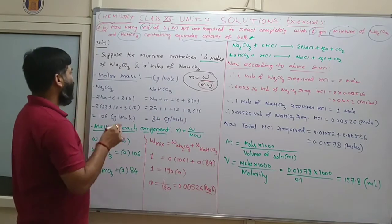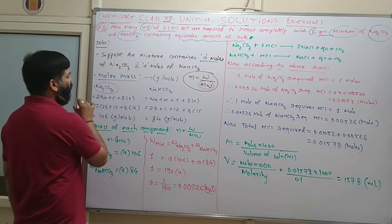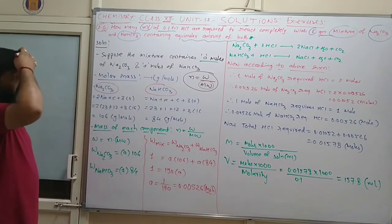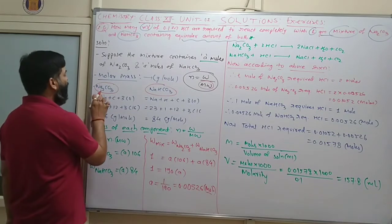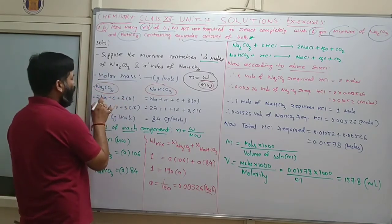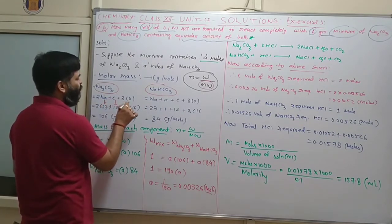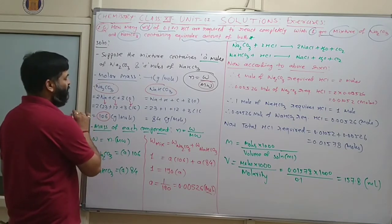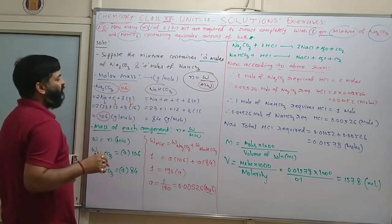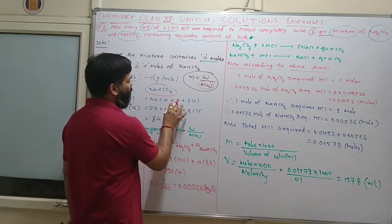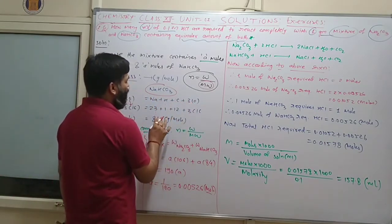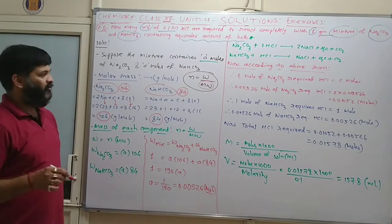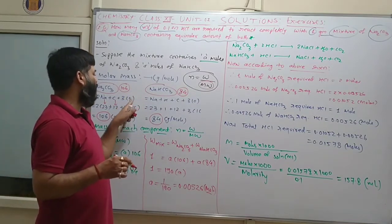Molar mass of Na2CO3: 2(23) + 12 + 3(16) = 106 g/mol. Molar mass of NaHCO3: 23 + 1 + 12 + 3(16) = 84 g/mol. Since the mixture is equimolar, let each have A moles.